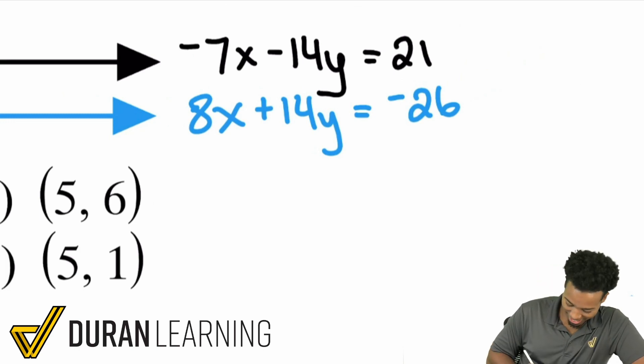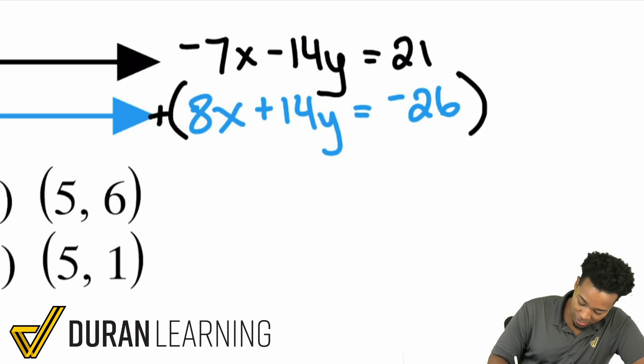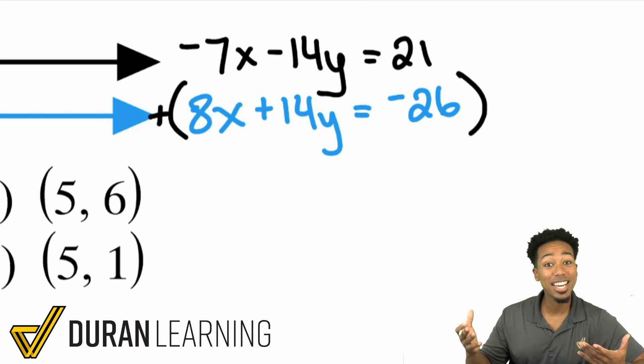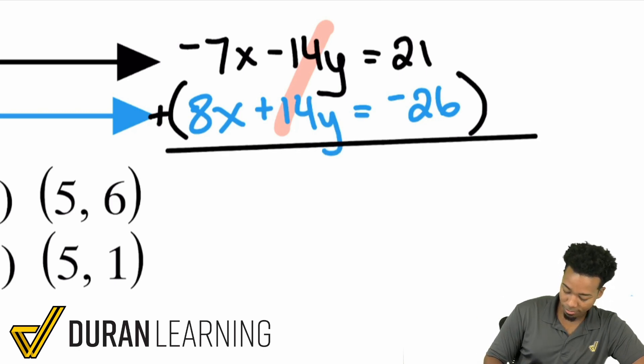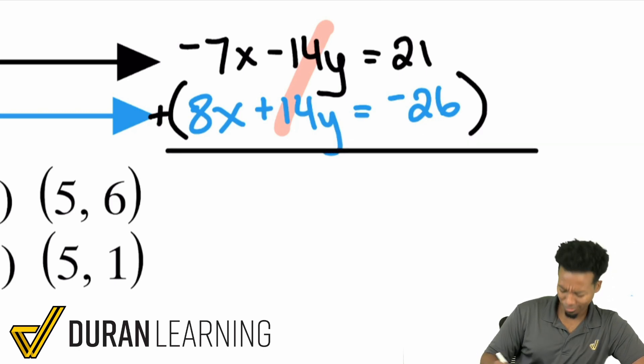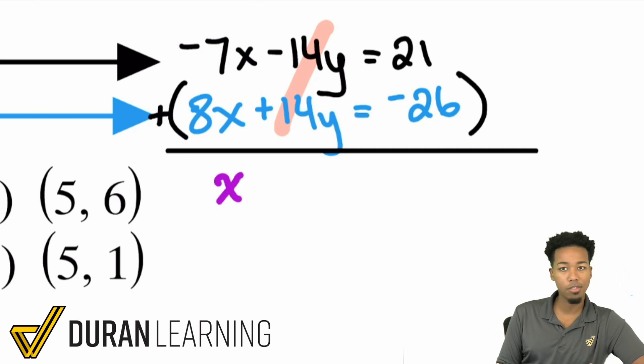We should be feeling pretty good because when we add these equations together, we have a negative 14y and a positive 14y. Booyah, that eliminates. That's what we wanted. Negative 7x plus 8x, that's going to be a positive x. Right? Negative 7 plus 8 is positive 1, so that's an x.